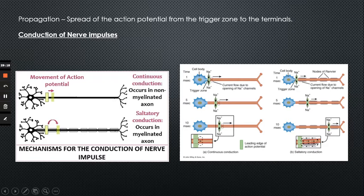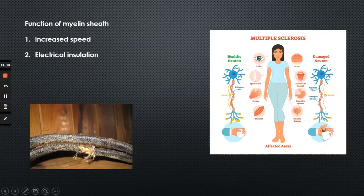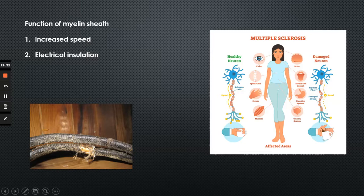The myelin sheath has two functions. First, it increases the speed of the action potential — now you know why. Second, it provides electrical insulation. An electrical impulse travels along the axon, and just like wires in a house, if it's not insulated, there may be sparking.